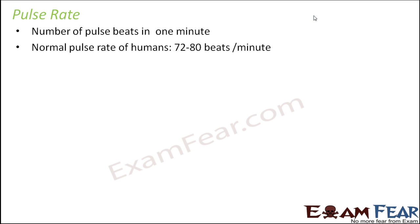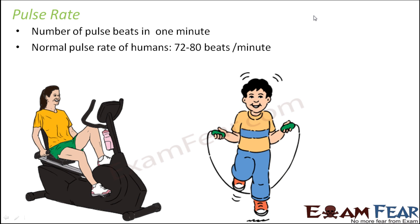Pulse rate varies but lies within the range of 72 to 80 under normal conditions. During heavy activities like exercise or playing, the heart pumps extra blood to provide more oxygen to the muscles, since oxidation of food requires oxygen. As a result, the pulse rate increases and breathing rate also increases, going beyond 80 beats per minute during heavy exercise.